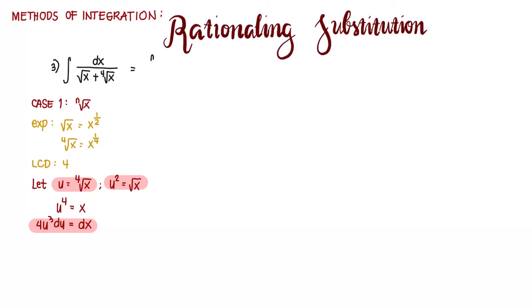Our given will now become 4u cubed du divided by square root of x is u squared and the fourth root of x is u. We put a constant outside. That's 4u cubed du and then we factor out u, leaving u plus 1. We cancel out u, leaving 2, exponent 2 in the numerator.